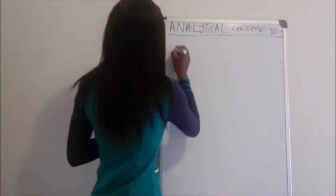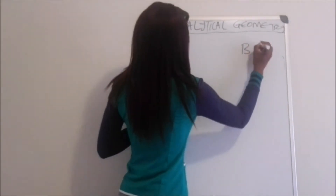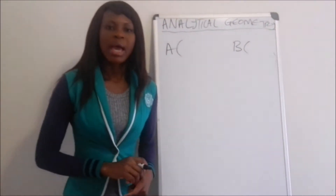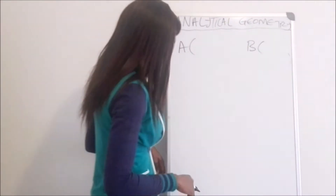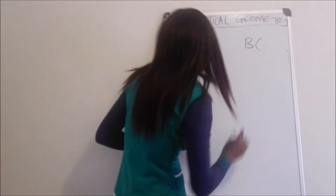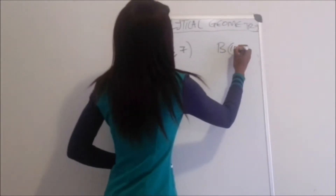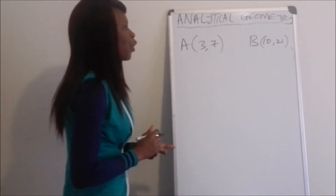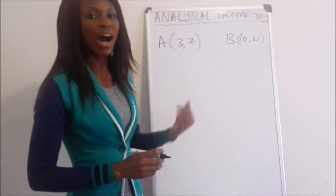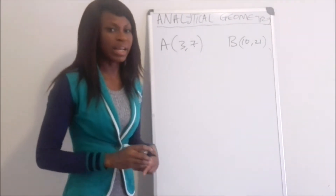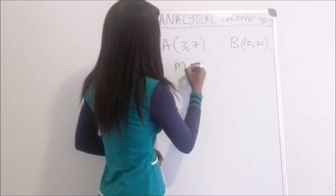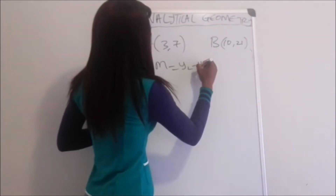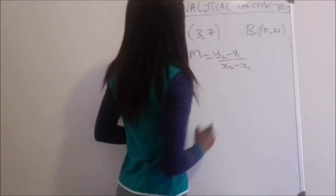Suppose we are given two points, point A and point B, and we are told to find an equation of a straight line between those two points. The coordinate of point A is (3, 7) and point B is (10, 21). We have two points on the line and we are asked to find the equation. Since we are not given a gradient, the first thing to do is find the gradient: m = (y₂ − y₁) / (x₂ − x₁).